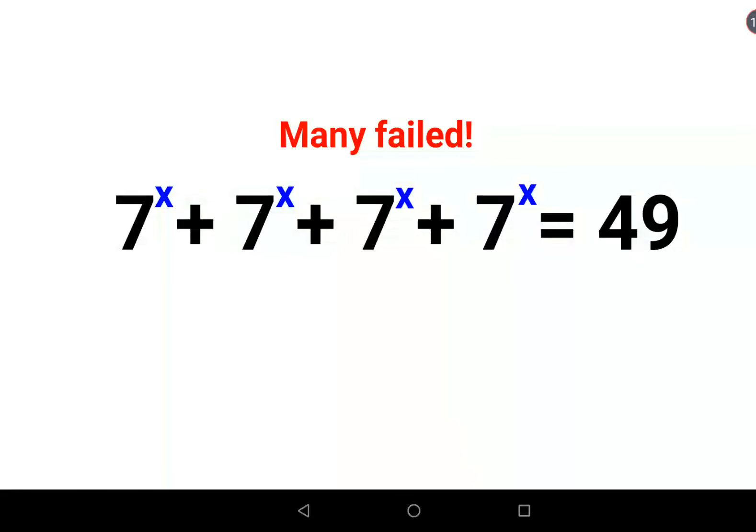Welcome everyone. Today we are going to solve a very nice indices problem. The question is 7^x + 7^x + 7^x + 7^x = 49. Now in this kind of scenario, a lot of people don't understand that directly at this point you should take log. You can, but things become very tricky.